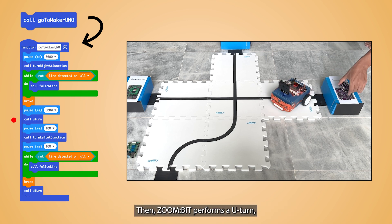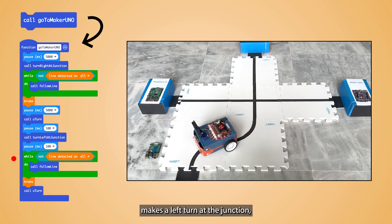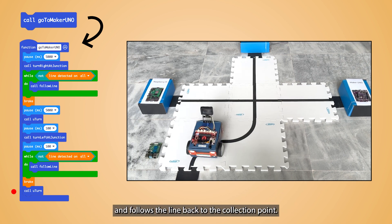Then ZoneBit performs a U-turn, makes a left turn at the junction, and follows the line back to the connection point.